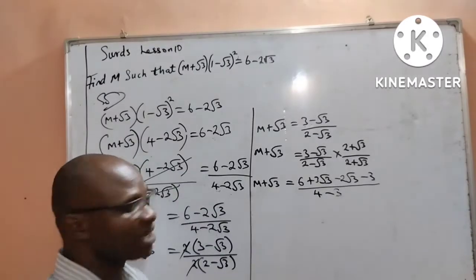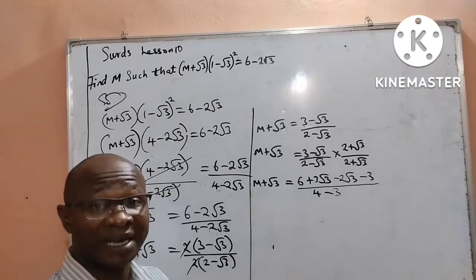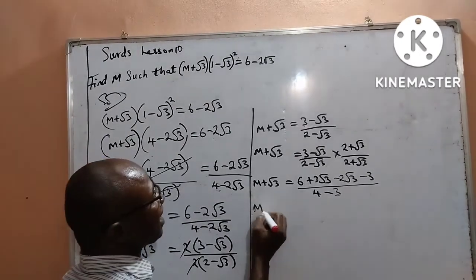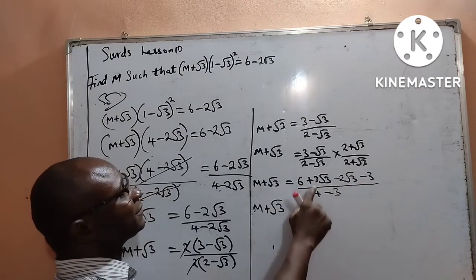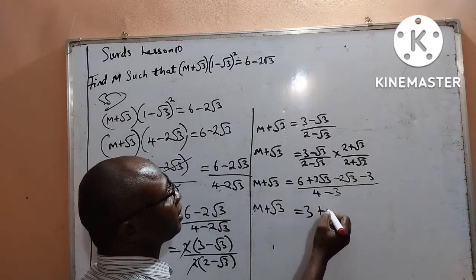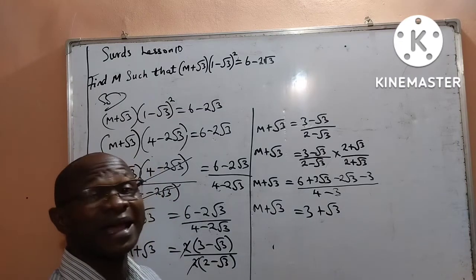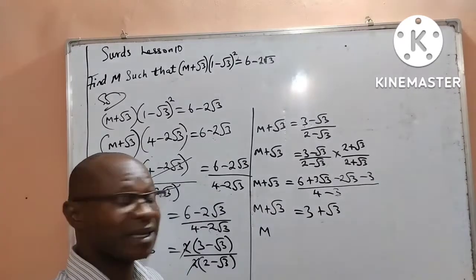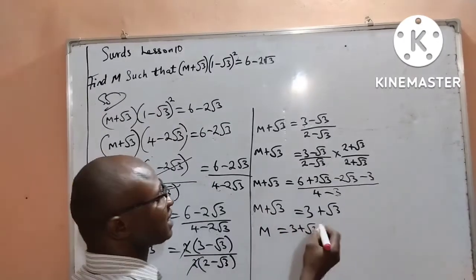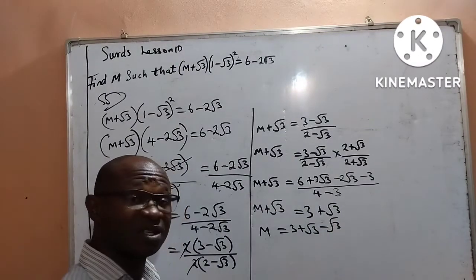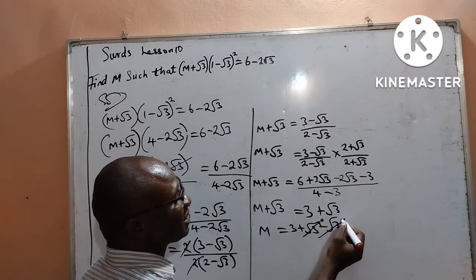Anything divided by 1 is itself — for example, 5 over 1 is the same as 5. So what is at the numerator is what remains on the right-hand side. Therefore, m plus root 3 equals 6 minus 3, then 3 root 3 minus 2 root 3 simply gives me root 3. I will now collect like terms, taking root 3 from the left to the right-hand side, so root 3 minus root 3 cancels to 0.